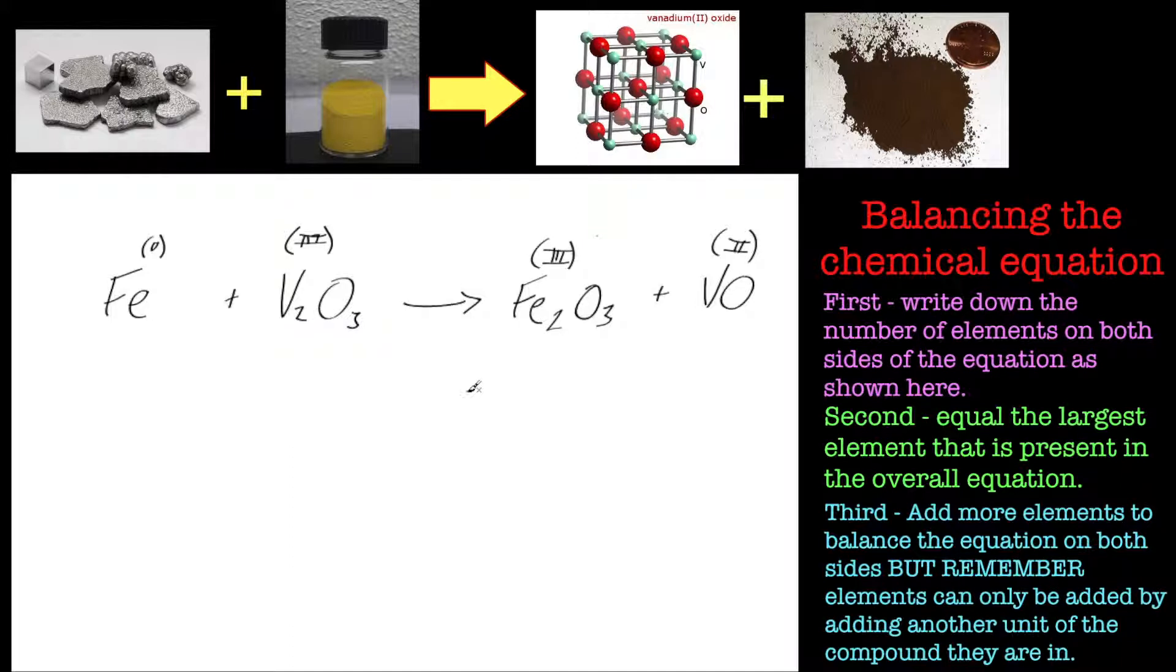We've got one form of vanadium oxide and then on the other side we've got another form of vanadium oxide, and they are different. So we've got iron oxidized by vanadium oxide, which is in turn reduced. It's called reduced, and I'll cover that in another tutorial, to give another form of vanadium oxide, a reduced form of it, and iron oxide.